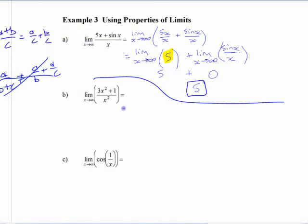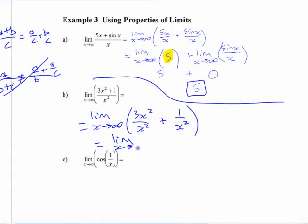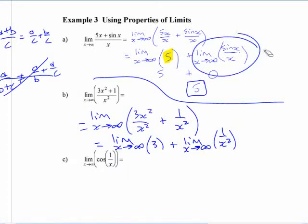How far do we get with this here? This is the same as the limit of 3x squared over x squared plus the limit of 1 over x squared. This equals the limit of 3 plus the limit of this function here. This one, you can see what's happening. This was one that we knew. We had just figured out.